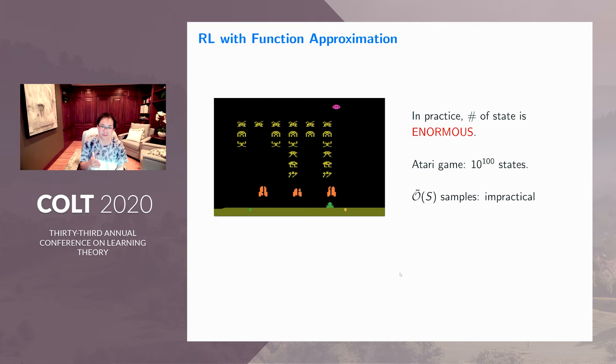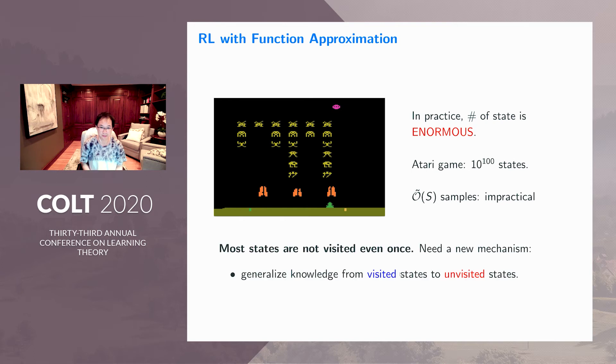However, when we move from theory to practice, we notice that in many practical applications, the number of states is actually enormous. For example, in Atari games, we typically face 10^100 number of states. If we have any algorithm that scales linearly with the number of states, that's going to be impractical to learn those games. Moreover, we realize when training to play Atari games, most states are not visited even once. So we actually require a new mechanism to learn those reinforcement learning tasks—we want to generalize knowledge from visited states to unvisited states.